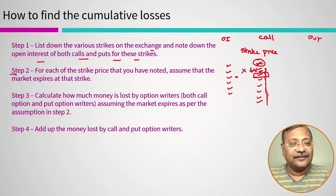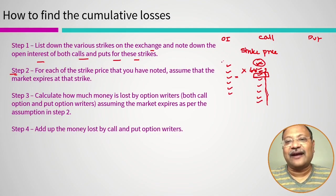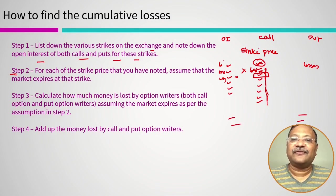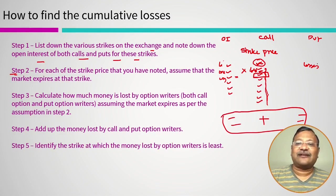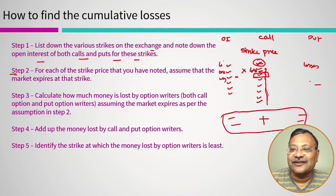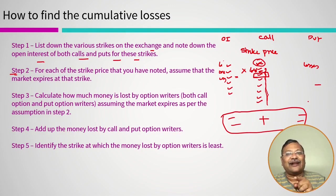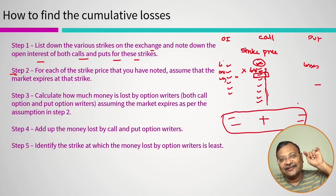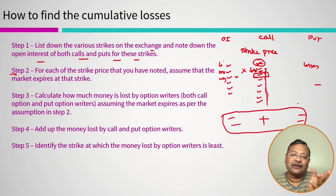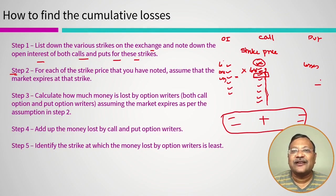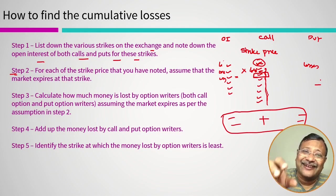Then add up the money lost by call and put option writers. Once we have the losses at each level, we add up the losses of the call and the put and identify the strike price at which the total loss is minimum. We are calculating the loss from the viewpoint of the option writer. The point at which the writer's loss is minimum is the point where the buyer will suffer the maximum pain. Open interest is considered because it tells us how many writers or sellers are accumulating at each strike level.